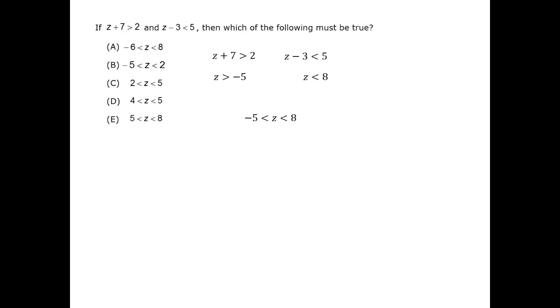Not necessarily. We can consider possible cases. If it's true that minus 5 is less than z which is less than 8, then a possible value of z is 0, for example. That means it's not true that C must be true, or D, or E. So we can rule them out.